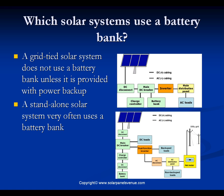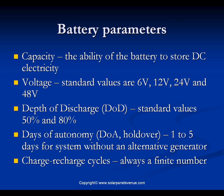Now we come to battery parameters. The ability of a battery to store DC electricity is called capacity. Capacity is measured in ampere-hours. Battery capacity shows how much current can be provided for a given number of hours. After DC electricity is put into storage in a battery, the latter can render it as DC voltage. Standard values of battery voltage are 6 volts, 12 volts, 24 volts, and 48 volts.